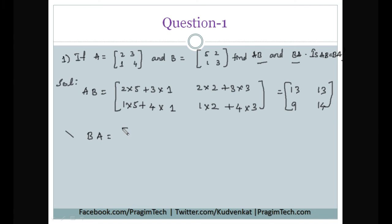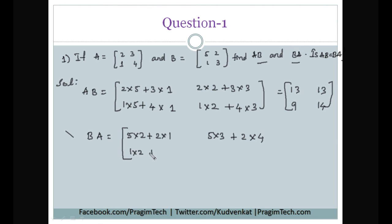Now let us calculate BA. BA means we consider B = [5, 2; 1, 3] multiplied by A = [2, 3; 1, 4]. First row, first column: 5×2 + 2×1 = 12; first row, second column: 5×3 + 2×4 = 23; second row, first column: 1×2 + 3×1 = 5; second row, second column: 1×3 + 3×4 = 15. So BA = [12, 23; 5, 15].